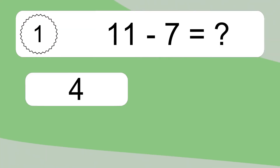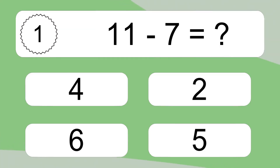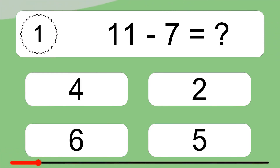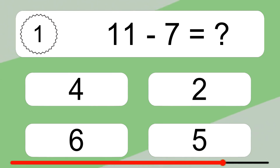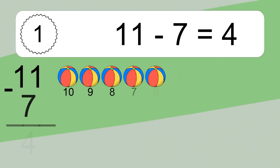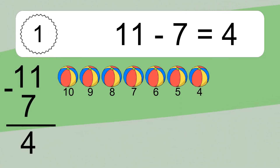11 minus 7 equals what? 11 minus 7 equals 4.